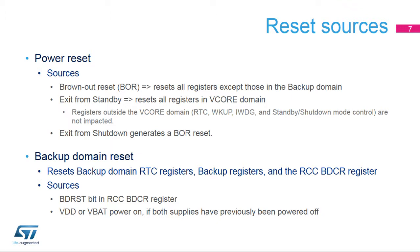The third type of reset is the backup domain reset, which resets the RTC registers, the backup registers, and the RCC backup domain control register. This reset occurs when the BDRST bit is set in the RCC backup domain control register. It also occurs when VDD and VBAT are powered on if both supplies have previously been powered off.